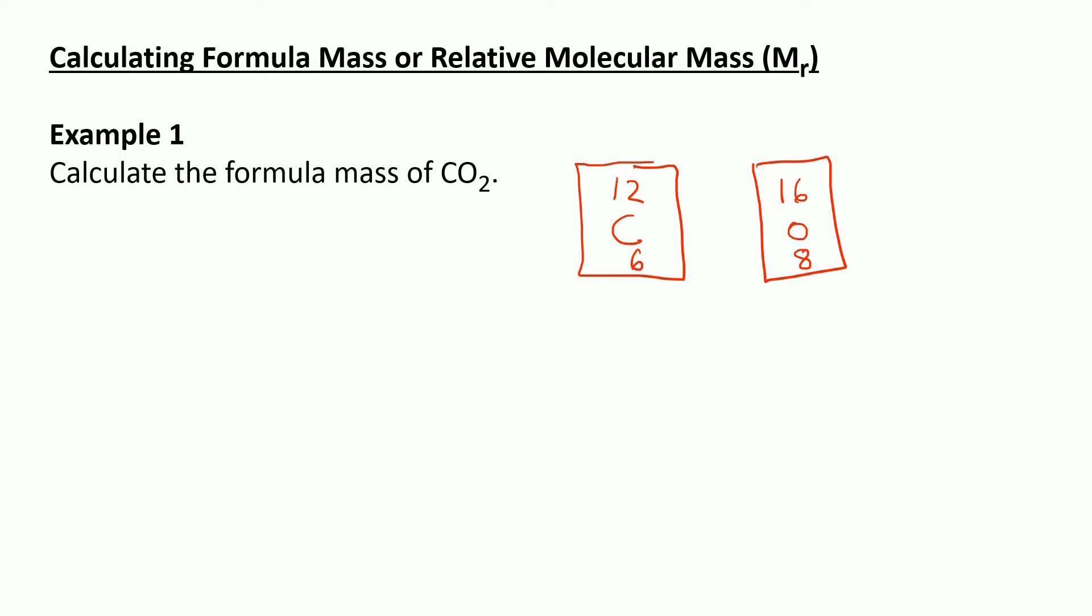When it asks us to calculate the formula mass of CO2, it's really wanting to know the mass of one molecule of CO2. So we need to add up the individual masses of all the carbon and oxygen atoms.